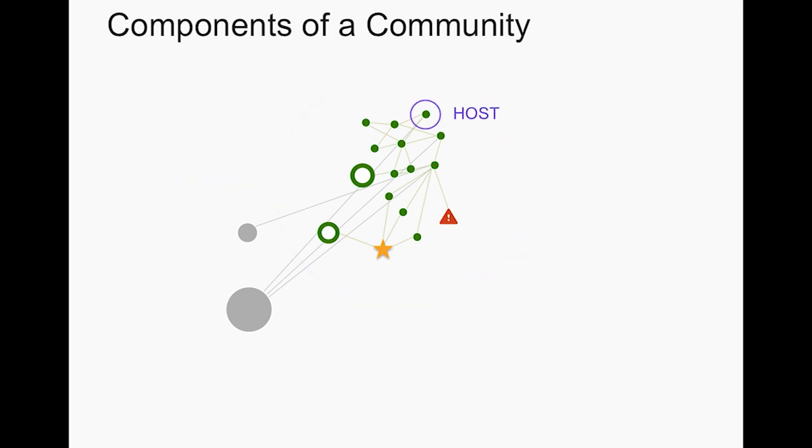If we look at the subcomponents of a community, most hosts are going to be shown by one of these green dots. If we needed to get more information on a host, we can just click on it. Now if we have a host that's showing a sign of an infection or an indicator of an attack, those hosts are going to be highlighted with a red triangle with an exclamation point in the center.